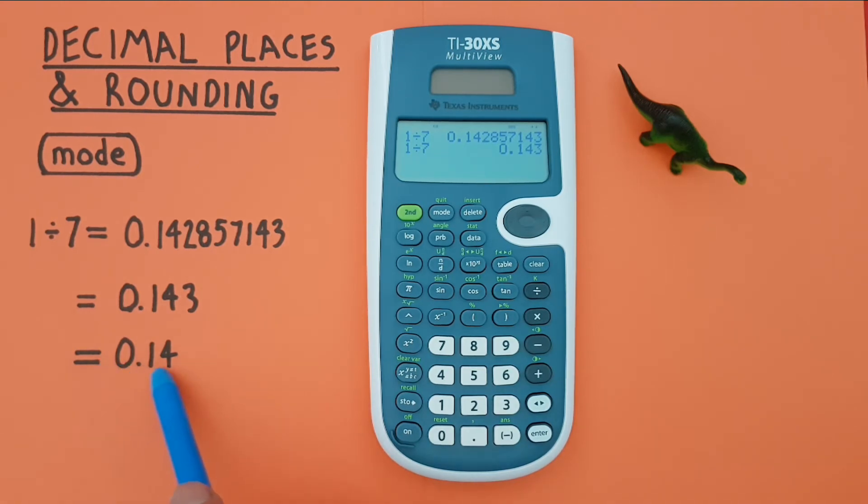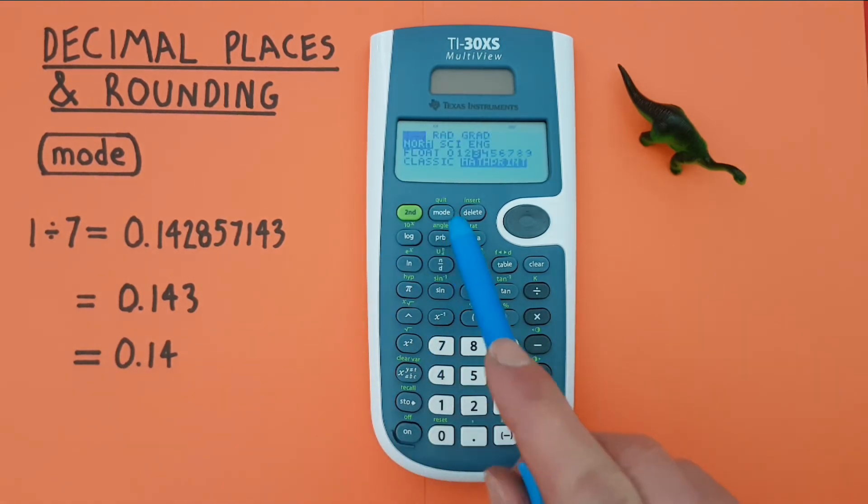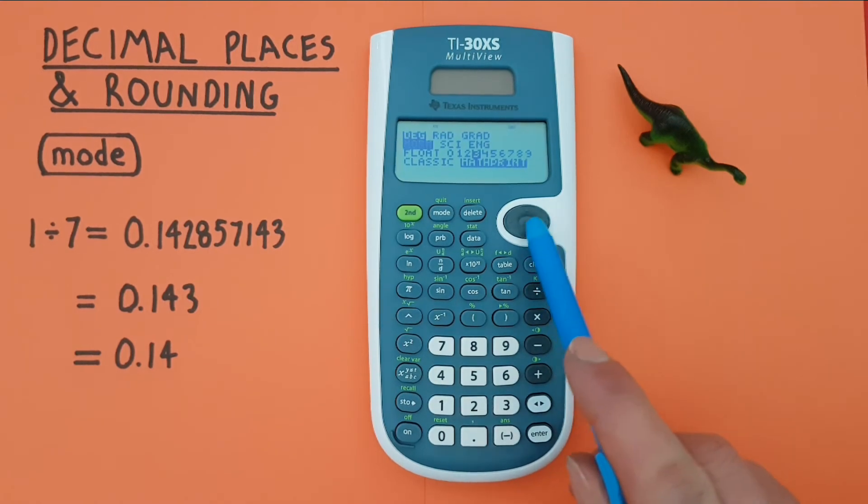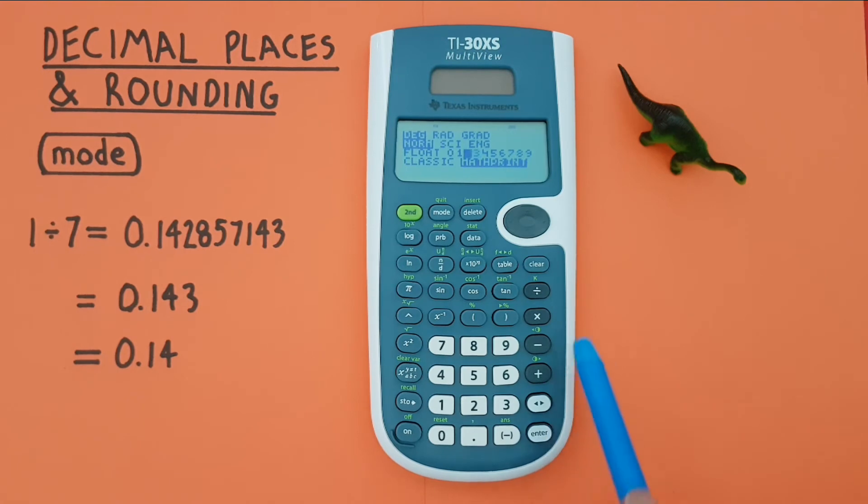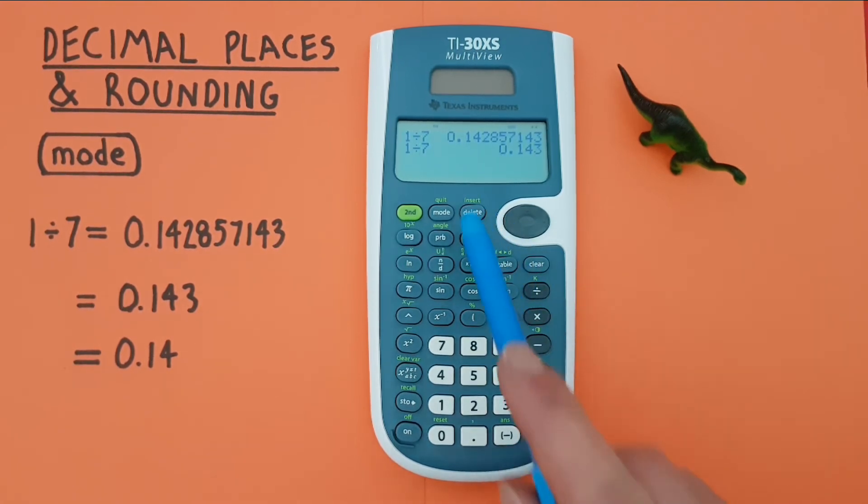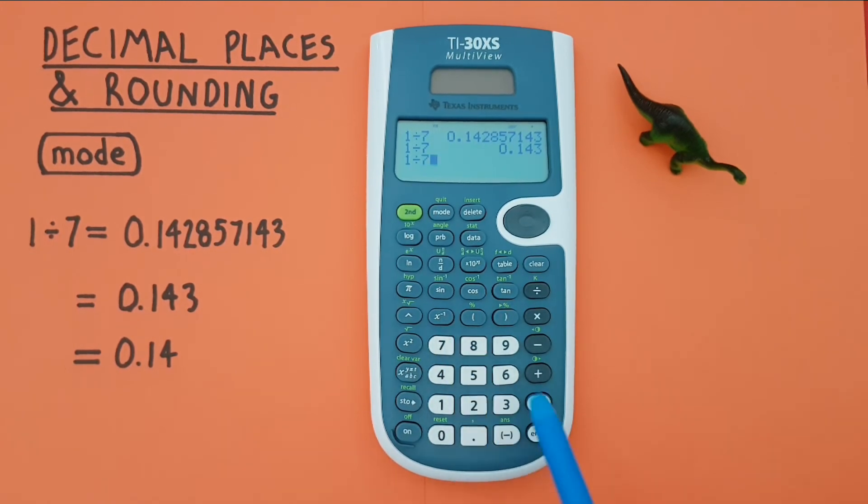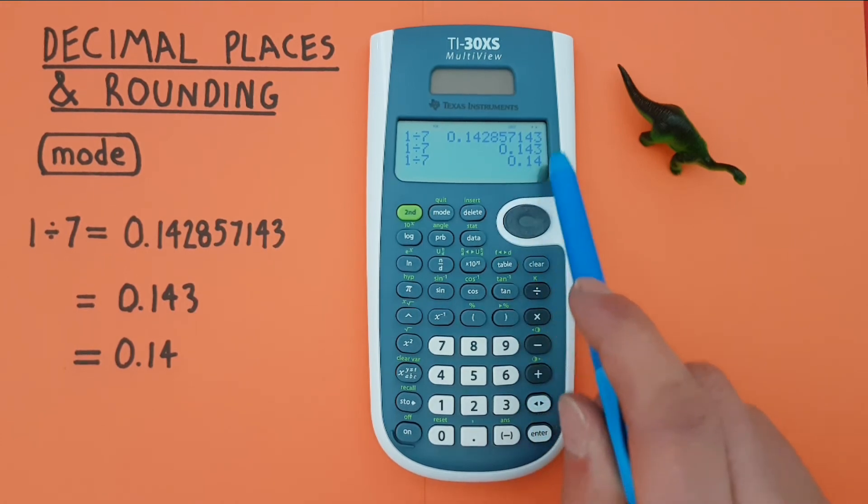If we wanted to get 2 decimal places, again we go into mode, scroll down, highlight 2, press enter and clear. And this time we can enter the calculation in again. We could press enter but we'll just do 1 divided by 7. And we see this time we get 0.14, which is again that rounded to 2 decimal places.